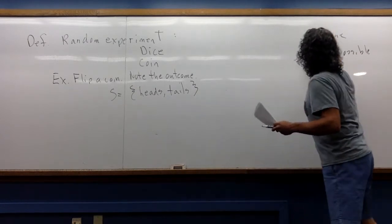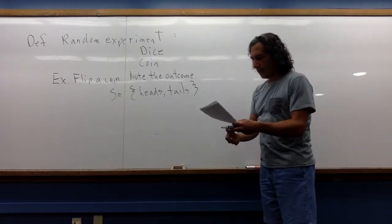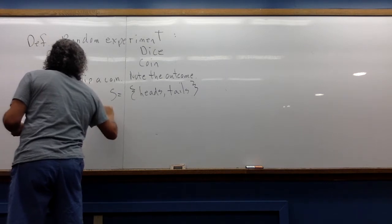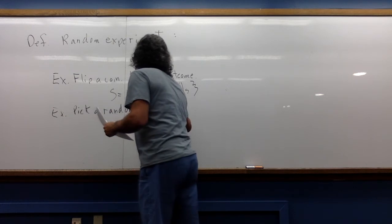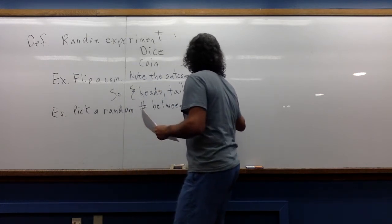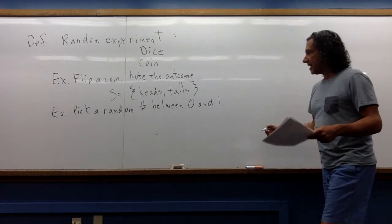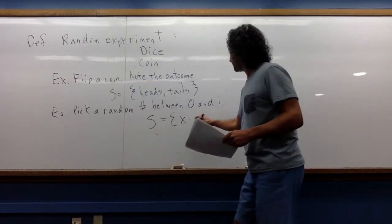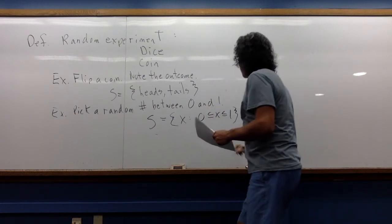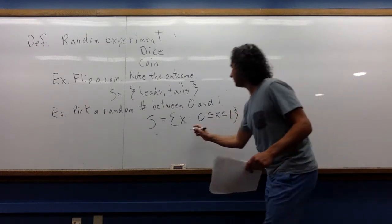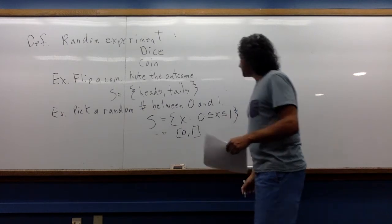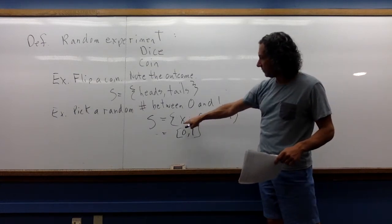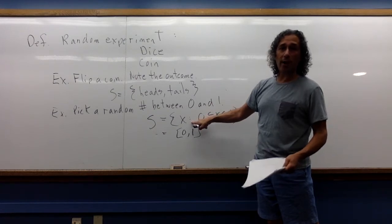And what I want to do now is just give you other flavors of sample spaces. So as an example, let's say you pick a random number between zero and one. So in this case, we can write the sample space as all the x's such that x is between zero and one. You also could have just written this to denote that, but as you're getting into higher level math classes, this notation is going to pop up more and more. This is read as all of the x's such that or with the property that x is between zero and one.